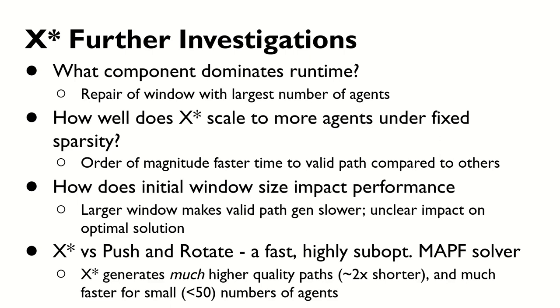We compared X* against Push and Rotate, a MAPF solver designed to scale to thousands of agents, which makes no attempt at path optimality. X* generates much higher quality paths. PR's paths were about twice as long as X*'s paths. And for smaller numbers of agents, X* is able to generate valid paths much faster.